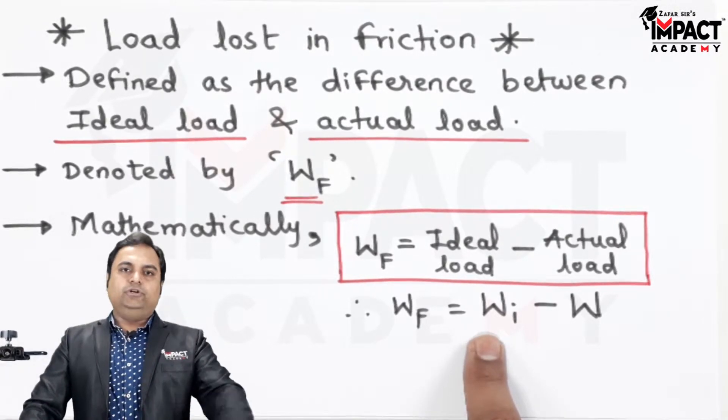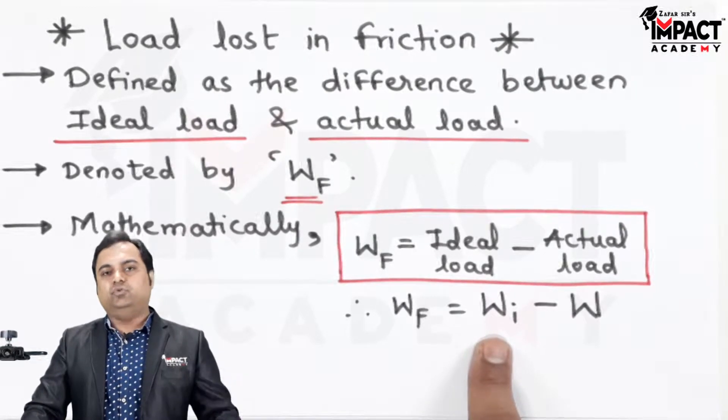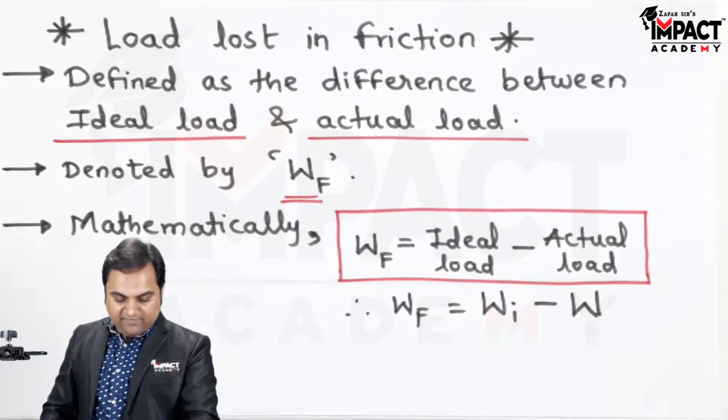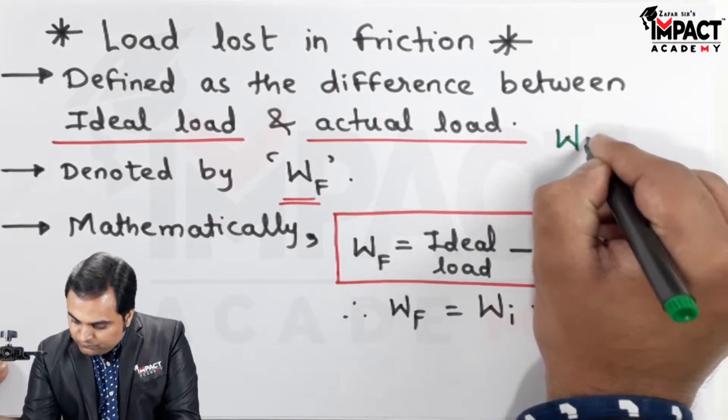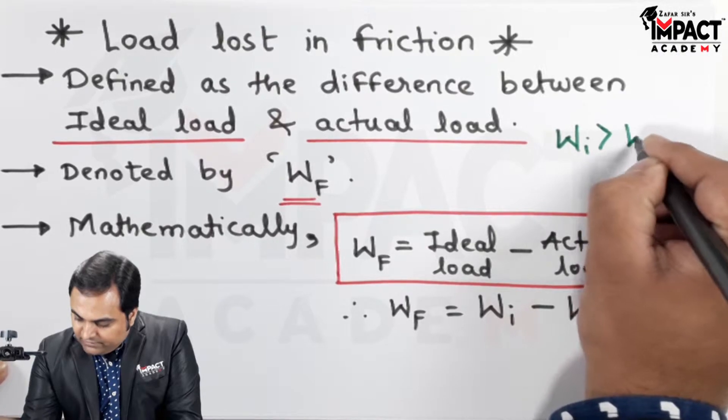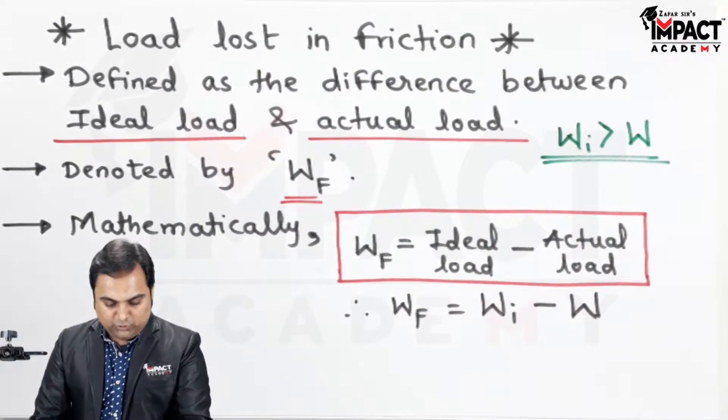So there is no need to overcome the frictional resistance. Whatever the effort is applied, that is used just to lift the load. So W_I value will always be greater than W value, that is ideal load is always greater than the actual load.